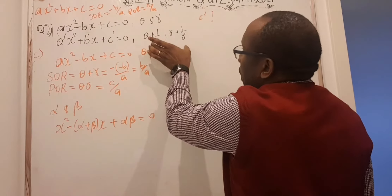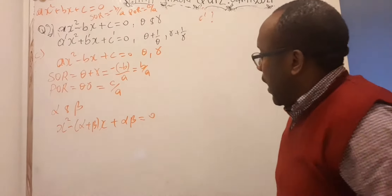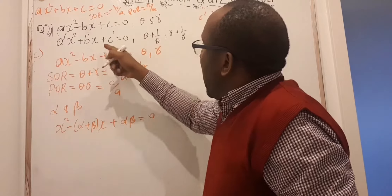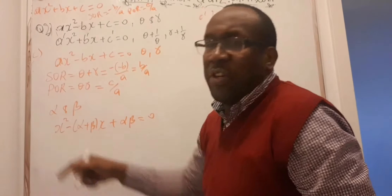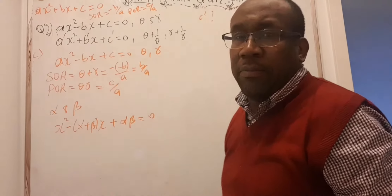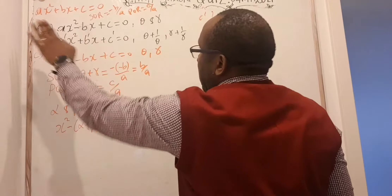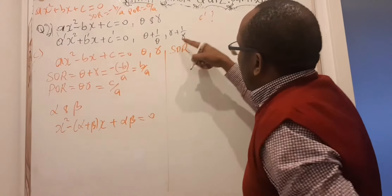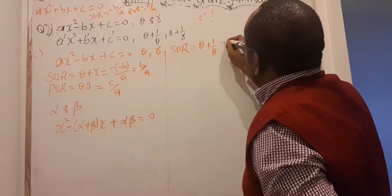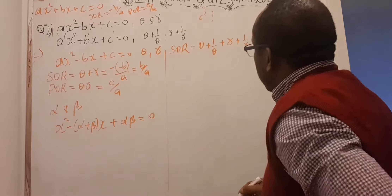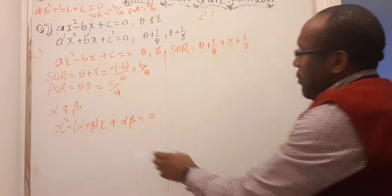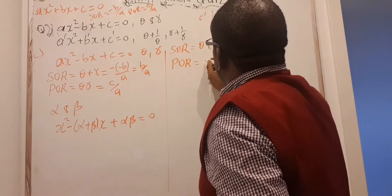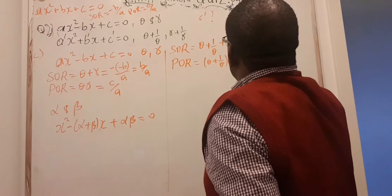When I come out with a ratio, the numerator will be c' and the denominator will be a', because the given equation has coefficient a', not 1. So let's go on to the work. My product of roots for this new equation is (θ + 1/θ) multiplied by (γ + 1/γ).